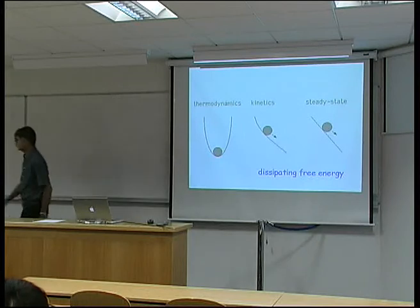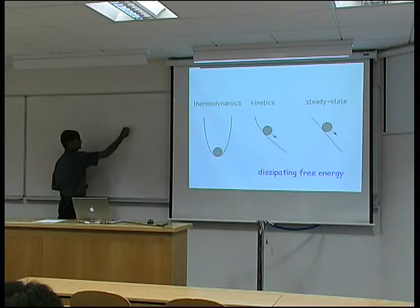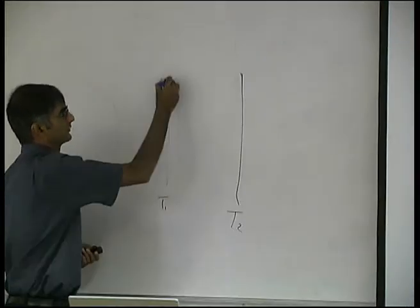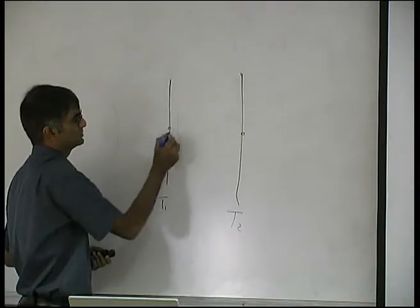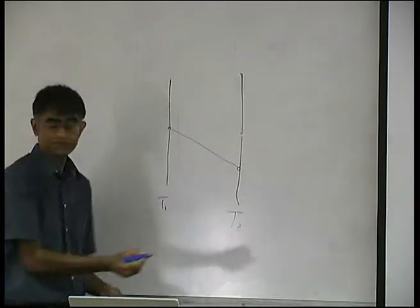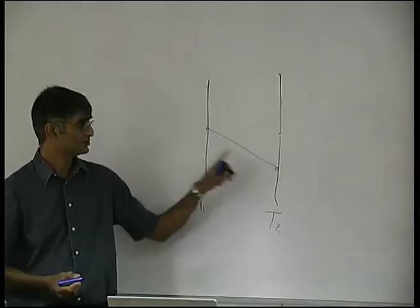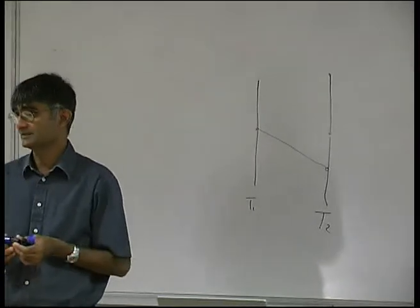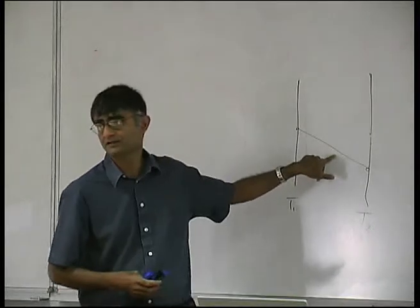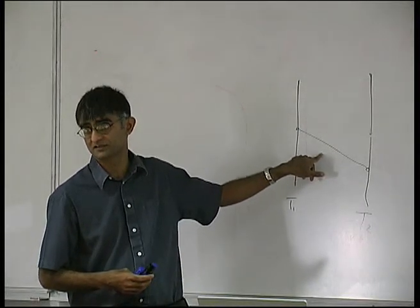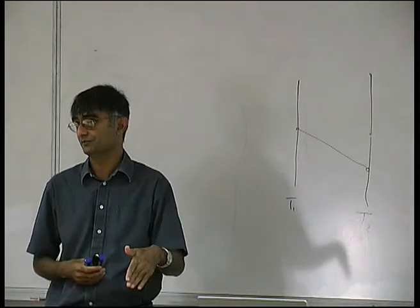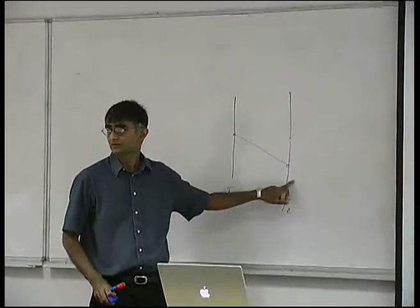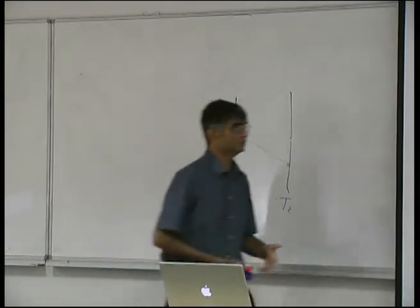Another example of a steady state process: if we have a temperature gradient across two walls, with one side at T1 and the other at T2, and those temperatures are not changing, heat flows down the gradient but the temperature distribution inside the slab is not changing. So if you are an observer located at any point, you see no change in temperature, even though heat is flowing. That's a steady state process. If the far-field temperature changed, it would no longer be steady state.